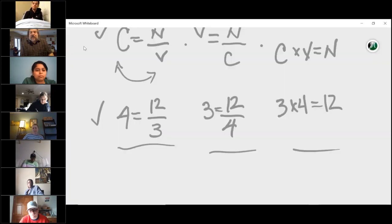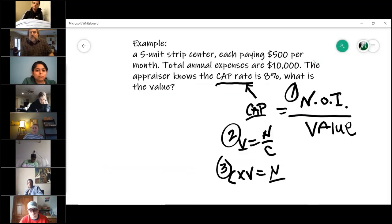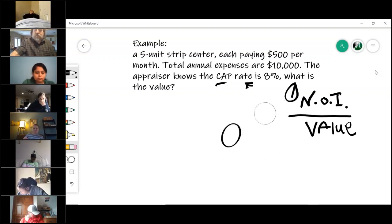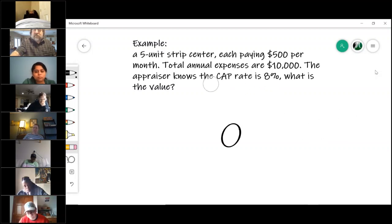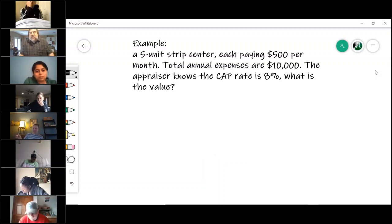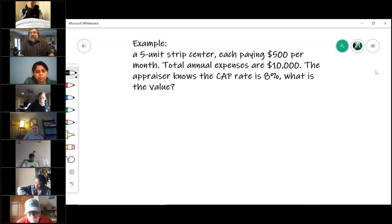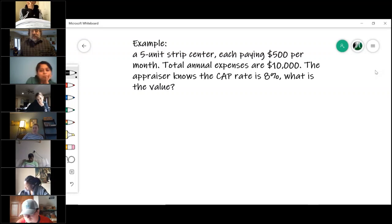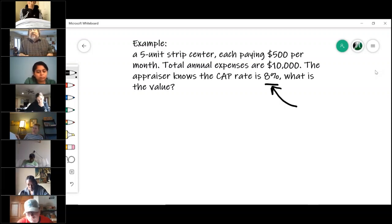So let's see if we can go back. Here's the question that I'm asking you. The question I'm asking you is if this strip center has five units and each is paying $500 per month, the total annual expenses are $10,000, and the appraiser knows the cap rate is 8%. Remember, you don't know how to figure this, so it will be given to you. I'm asking you, what is the value of this property?